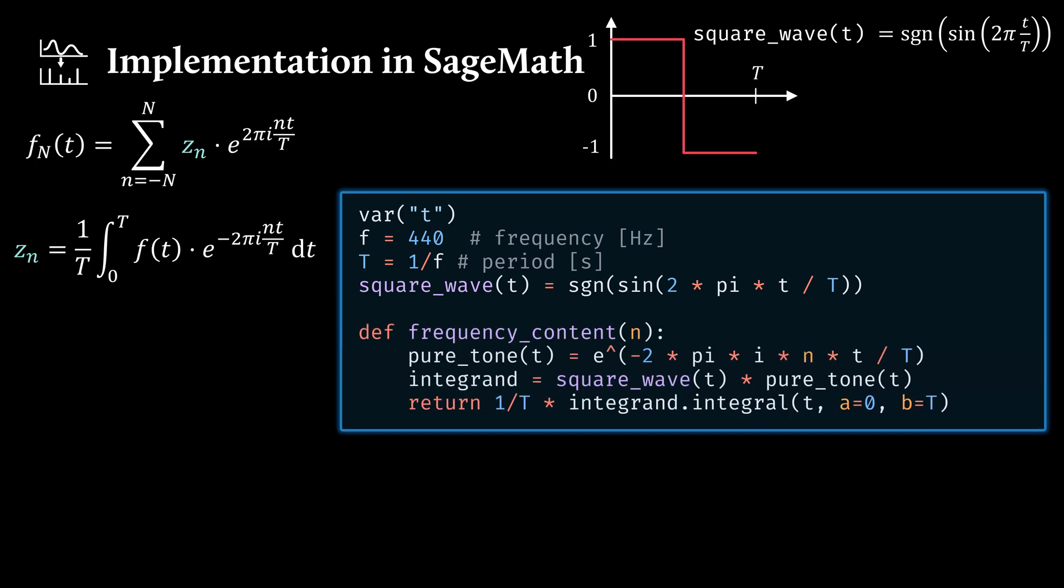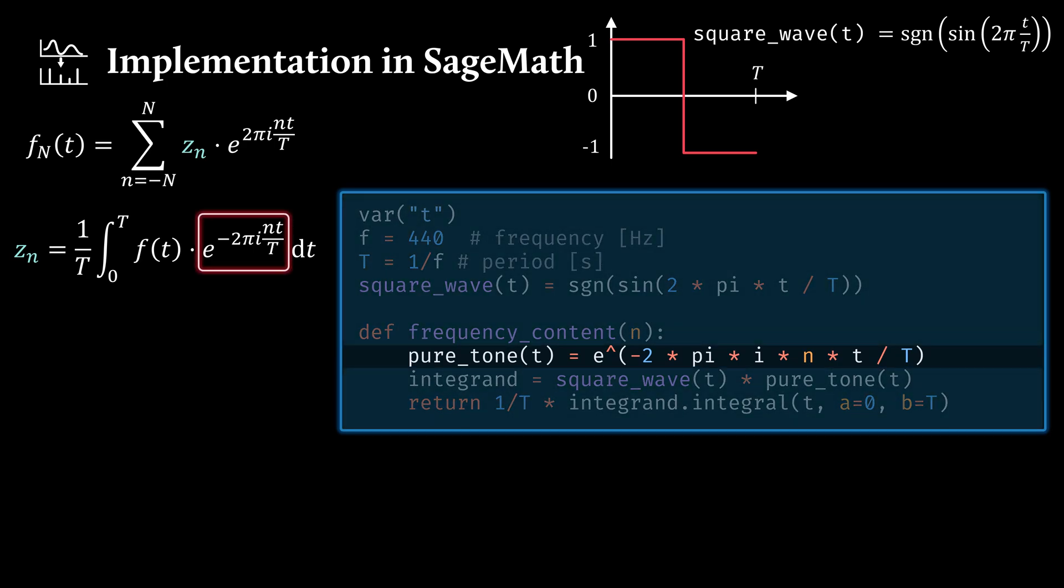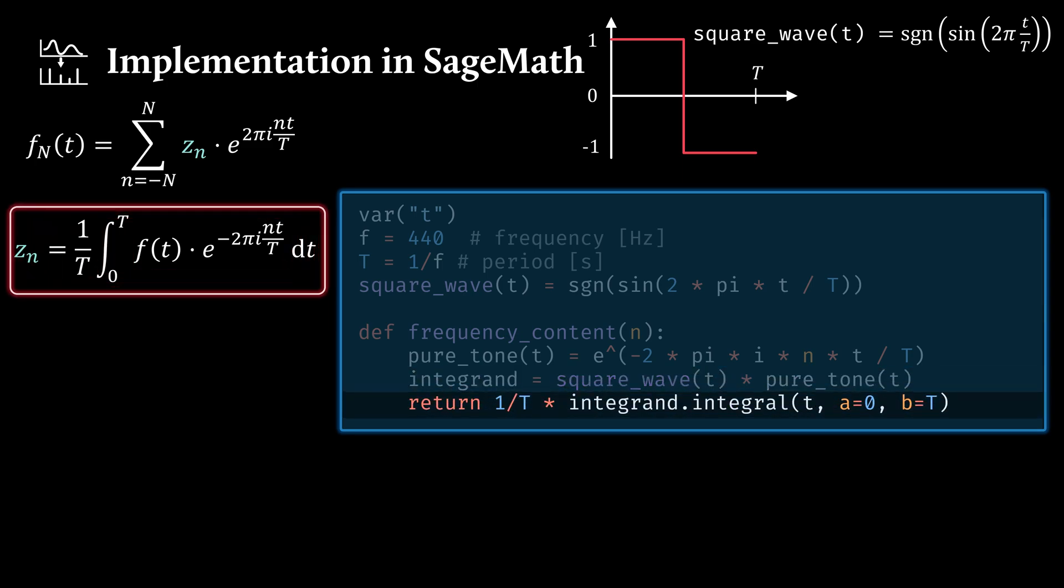Next, we define a function called frequency content that returns the coefficients Zₙ. First, we define a pure tone, that's a function dependent on t, and we just write down the expression you see here. And note that our function is dependent on n, we pass that in as parameter. You can see that n here and here as well. These coefficients are dependent on n. Then our integrand is just the function we're interested in, in this case the square wave, times our pure tone. And what we return is now the integral evaluated from 0 to t.